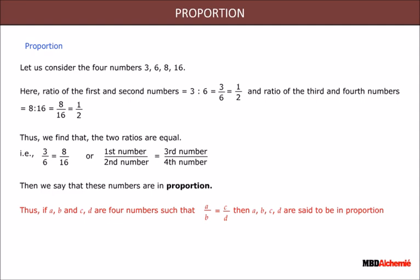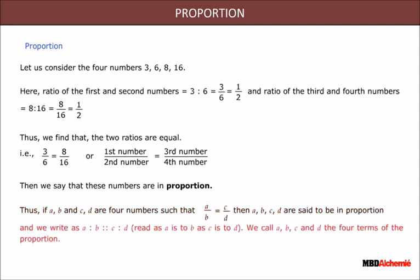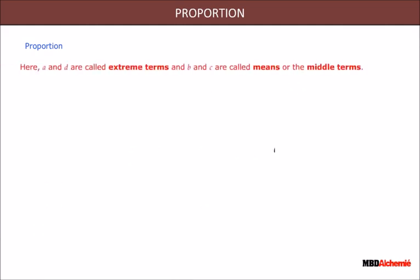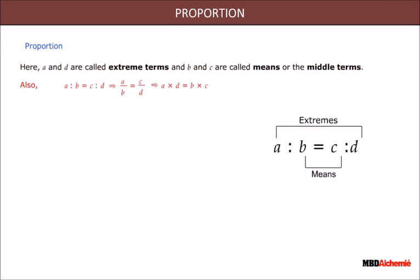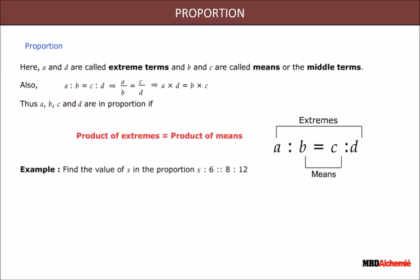If a, b, c, d are four numbers such that the ratio of a and b equals the ratio of c and d, then a, b, c, d are said to be in proportion, read as 'a is to b as c is to d.' Here a and d are called extreme terms and b and c are called means or middle terms. Also, a:b = c:d implies a/b = c/d, which means a×d = b×c. Thus a, b, c, d are in proportion if the product of extremes equals the product of means.